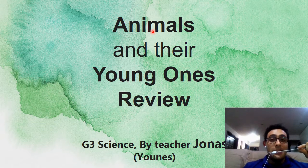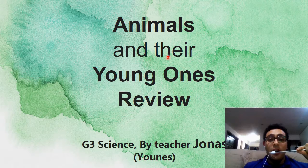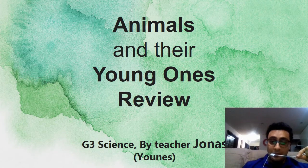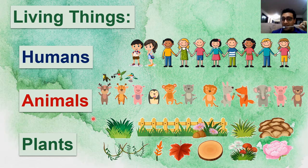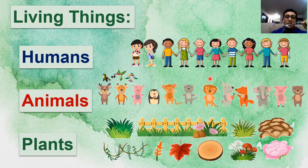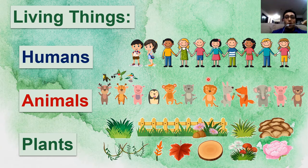The first lesson in science we learned was animals and their young ones. As you remember, living things are humans like us, animals like birds — all animals, even tiny ones like insects or huge ones like the blue whale — and plants.